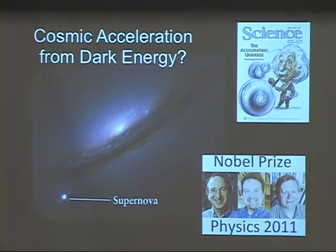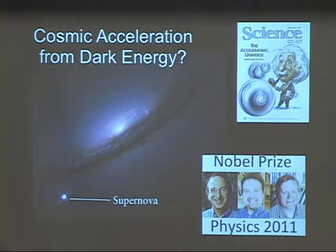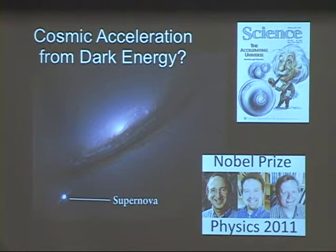One reason we believe this — or jump to that — is that even before those measurements were close, people were measuring supernovae. They had learned how to figure out, by looking at how a supernova evolves, how intrinsically bright it is. Supernovae are enormously bright — they can outshine a whole galaxy. This is actually a Hubble Space Telescope picture; it's real. If you can calculate how bright they really are, then you can calculate how far away they are, because to get as dim as you see them they must be farther and farther away.